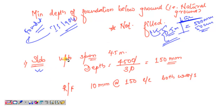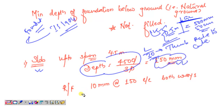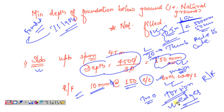For slab design, the thumb rule is depth = L/30, where L is the effective length. We are keeping a slab depth of 150 mm. Reinforcement in the slab: 10 mm dia bar at 150 mm center-to-center both ways. If you are providing a two-way slab, you also need to consider torsion reinforcement at the edges in addition to the main bars.